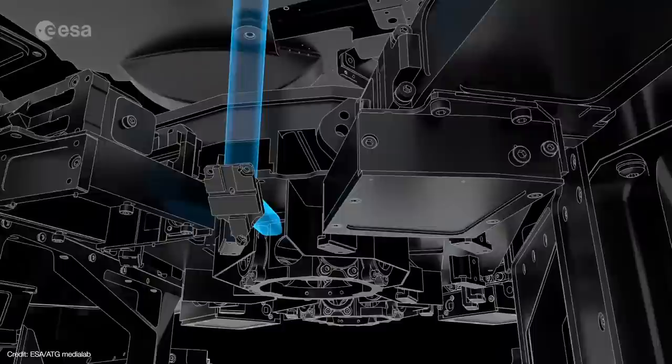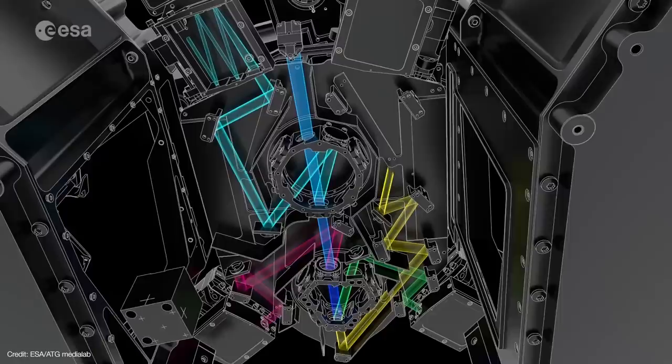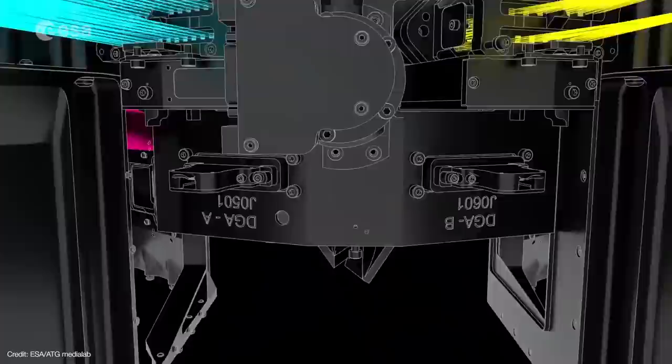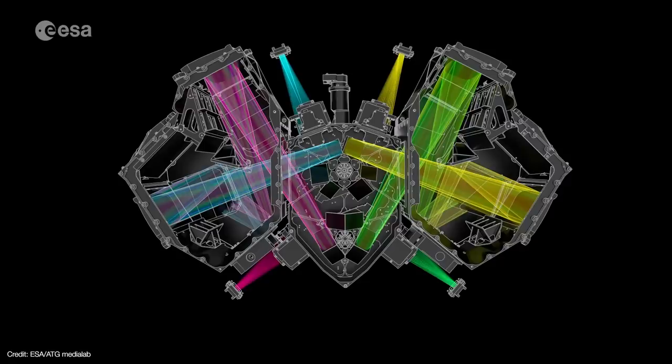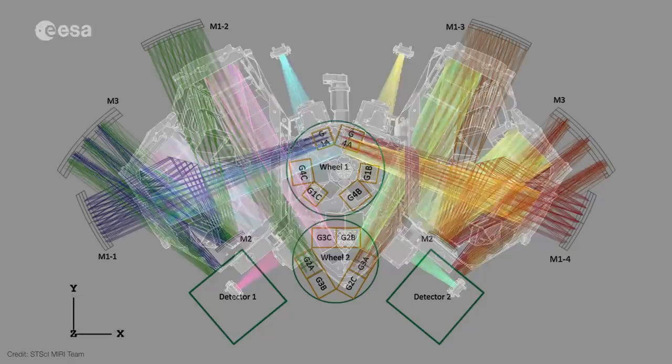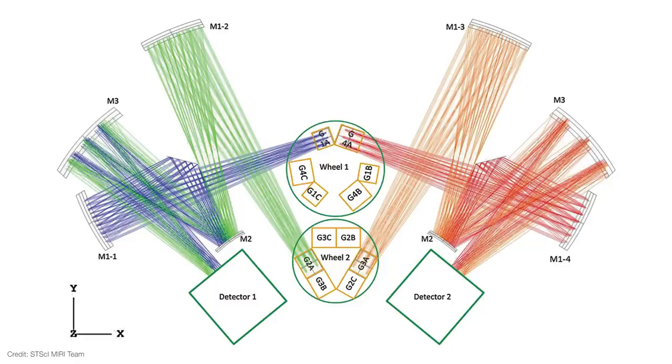Dichorics are beam splitters, three of which are used at any given time to send the light off into the four channels. Within each channel, the light is sliced and then collimated before it returns to a set of gratings mounted on the upper part of the DGA wheels. The gratings disperse the light into a spectrum, which eventually lands on the detectors. By rotating these two wheels, the DGAs present a combination of dichorics and gratings that are optimized for each of the three subbands.